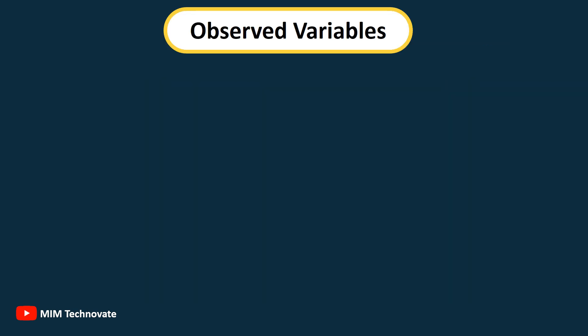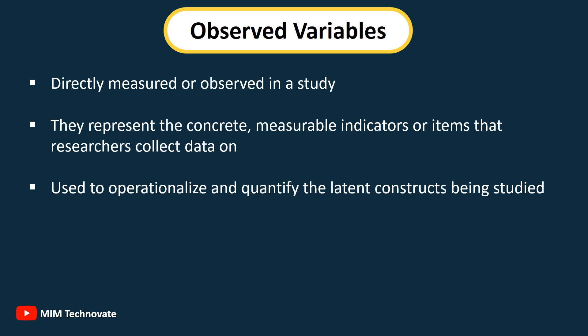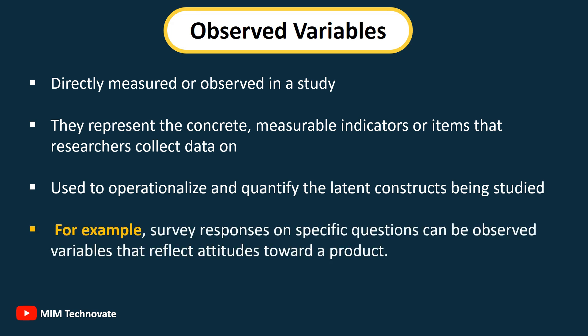Observed Variables: Directly measured or observed in a study. They represent the concrete, measurable indicators or items that researchers collect data on. Observed variables are used to operationalize and quantify the latent constructs being studied. For example, survey responses on specific questions can be observed variables that reflect attitude toward a product.